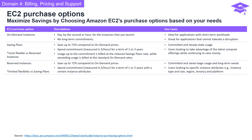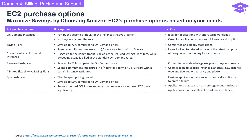Moving on to reserved instances: save up to 72% compared to on-demand prices by committing to a spend for one or three years with specific instance attributes — great for committed and steady-state usage with long-term needs. Here comes spot instances, the cheapest pricing model. Save up to 90% compared to on-demand prices by requesting unused EC2 instances, ideal for flexible applications that can withstand disruptions or have flexible start and end times.